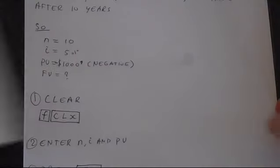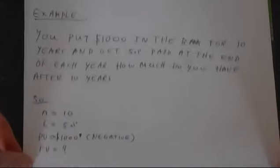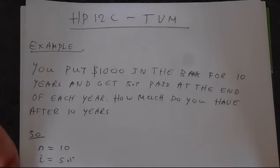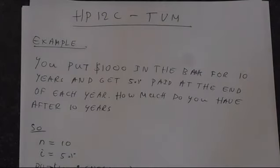So let's just jump to an example. The best way to explain how to do things is just go to examples. So you put $1,000 in the bank for 10 years and you get 5% paid at the end of each period. How much do you have after 10 years?